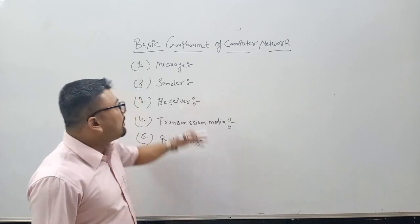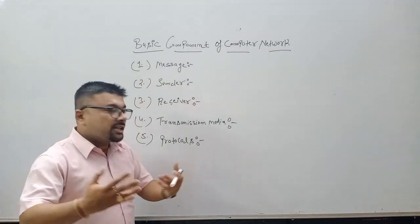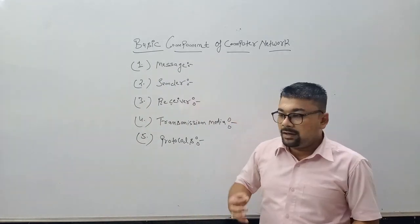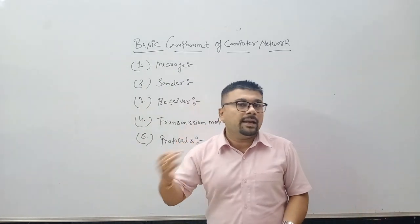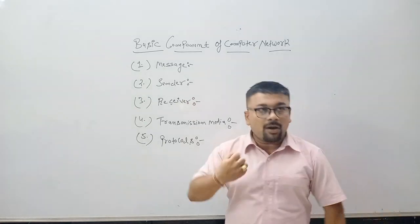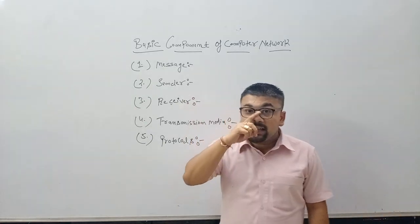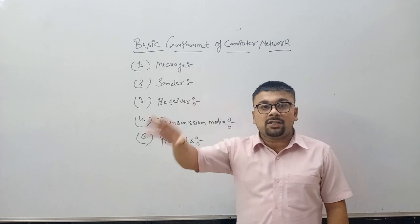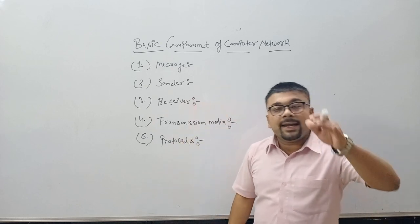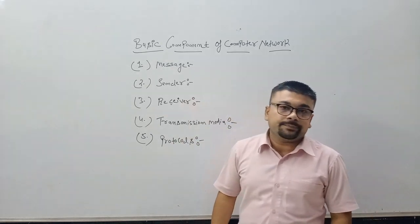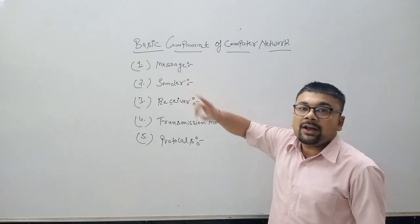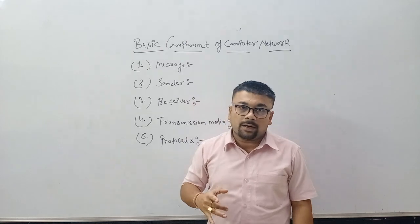First, let's talk about the message. What is the message? Information in the form of text, in the form of image, in the form of software, in the form of anything — all about data and raw material. We will share this data with one system to another. This message is our first component of the computer network.